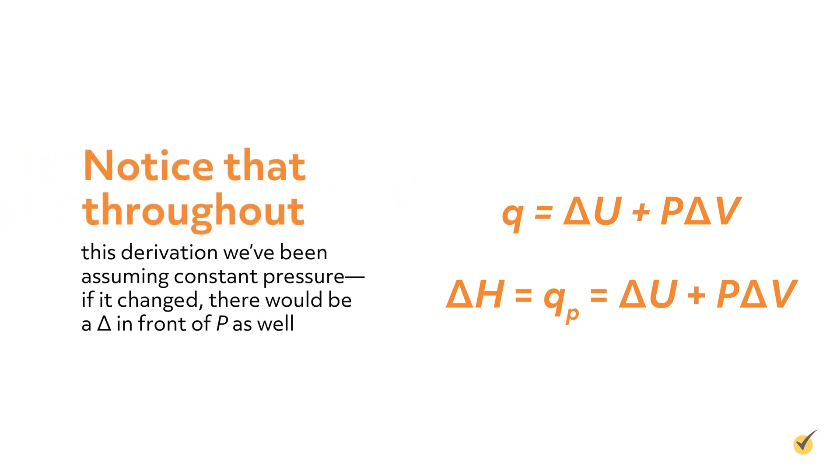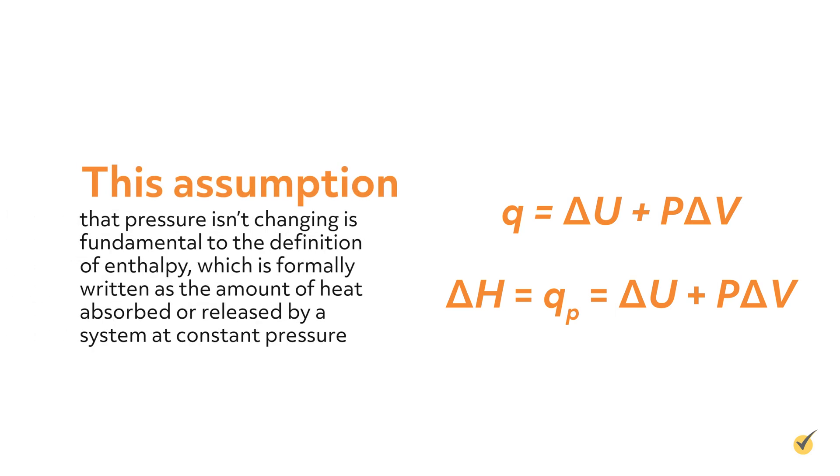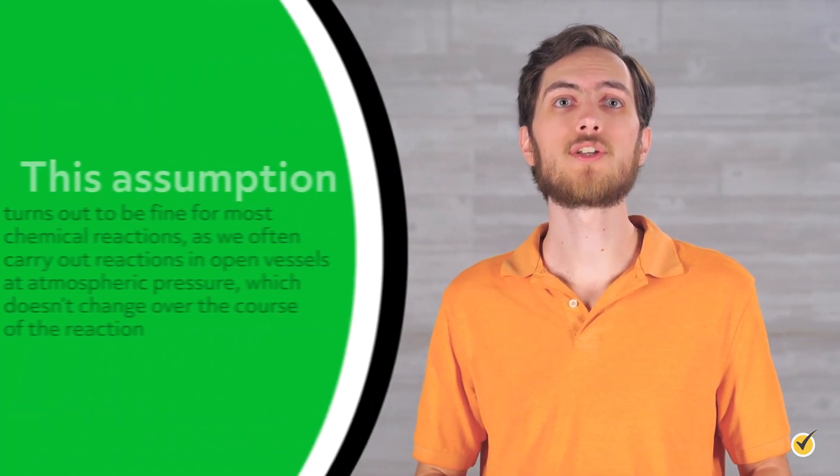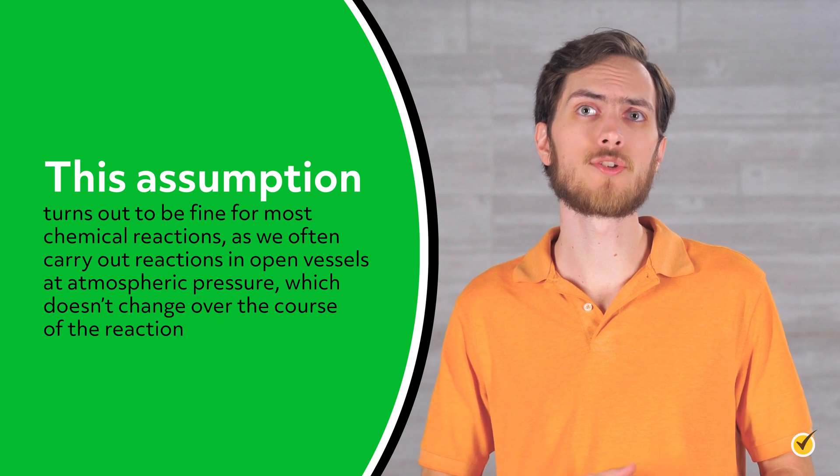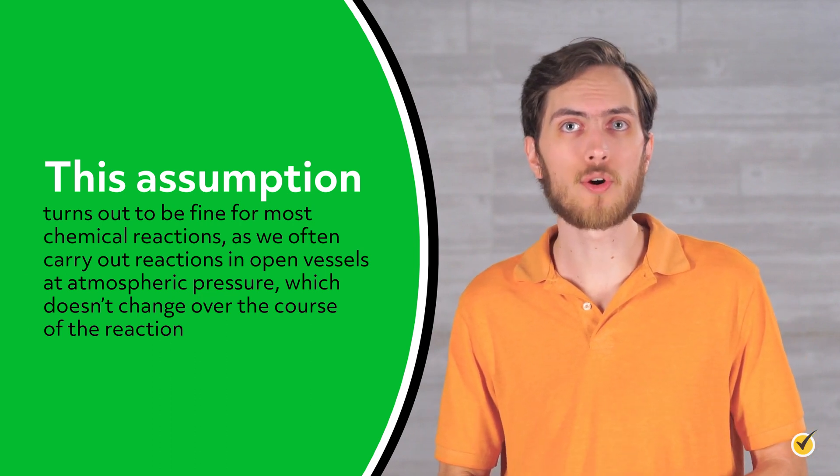Importantly, notice that throughout this derivation, we've been assuming constant pressure. If it changed, there would be a capital delta in front of the P as well. This was especially noticeable when we defined work. The volume of the system changed to maintain the internal pressure. This assumption that pressure isn't changing is fundamental to the definition of enthalpy, which is formally written as the amount of heat absorbed or released by a system at constant pressure. This is denoted in the equation with the subscript P on heat. This assumption turns out to be fine for most chemical reactions, as we often carry out reactions in open vessels at atmospheric pressure, which doesn't change over the course of the reaction.